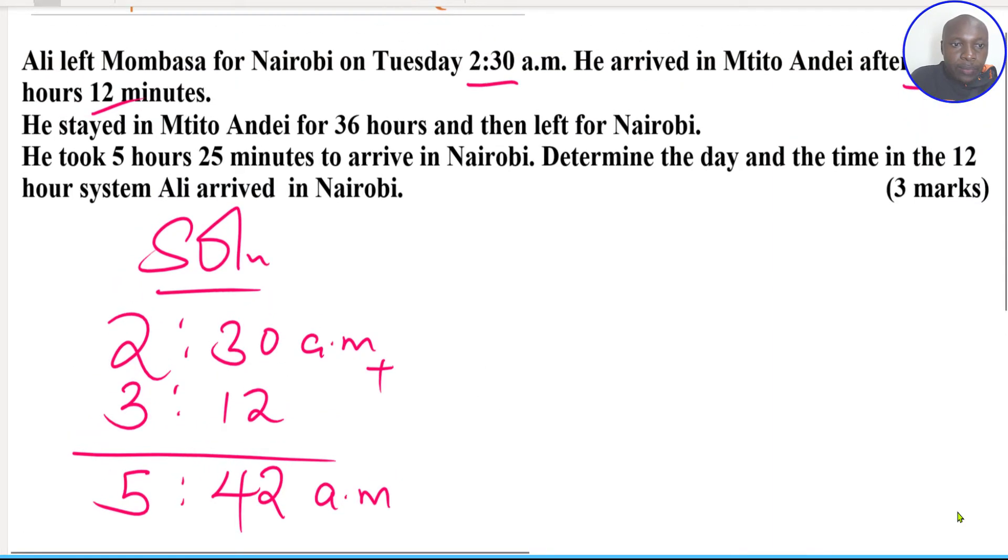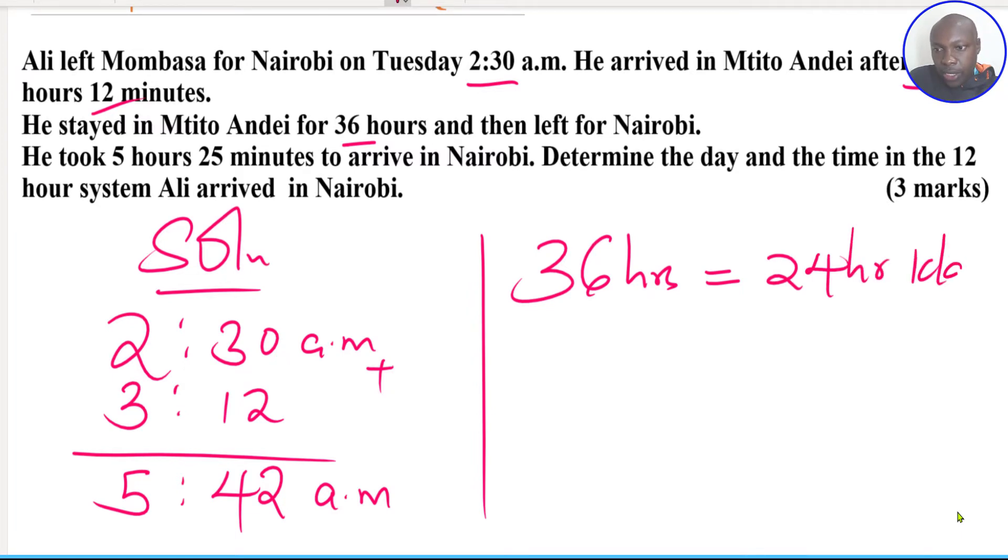Then after that he stayed in Mtito Andei for 36 hours and then left for Nairobi. Now 36 hours is equivalent to 1 day and a half. That is 24 hours which is 1 day, and 12 hours which is half a day. So to make this one simpler we shall add 1 day, 24 hours first. Then after that we add 12 hours.